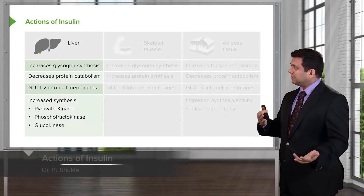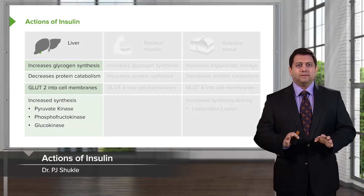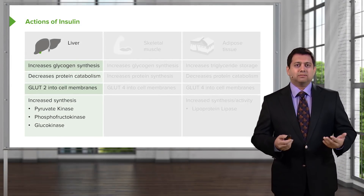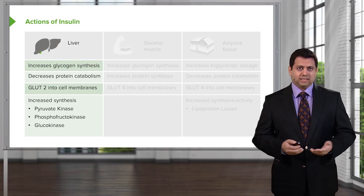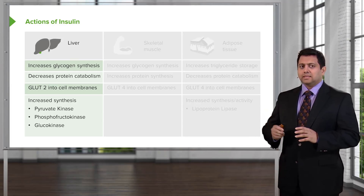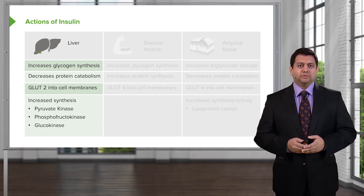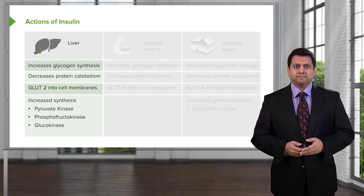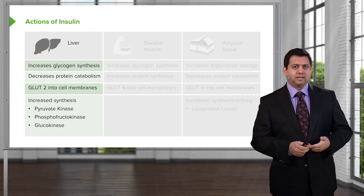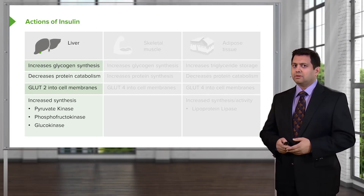Let's talk about insulin and how it works in the body. In the liver, it increases glycogen synthesis and decreases protein catabolism. It uses a porter called GLUT2 to move sugar into cell membranes. There is increased synthesis using pyruvate kinase, phosphofructokinase, and glucokinase.